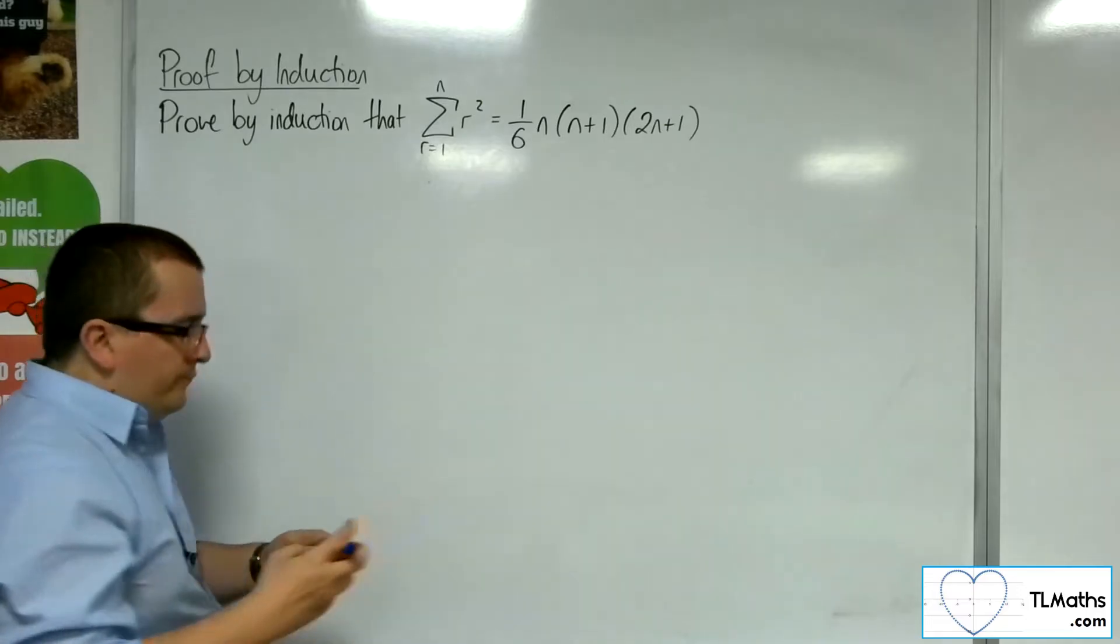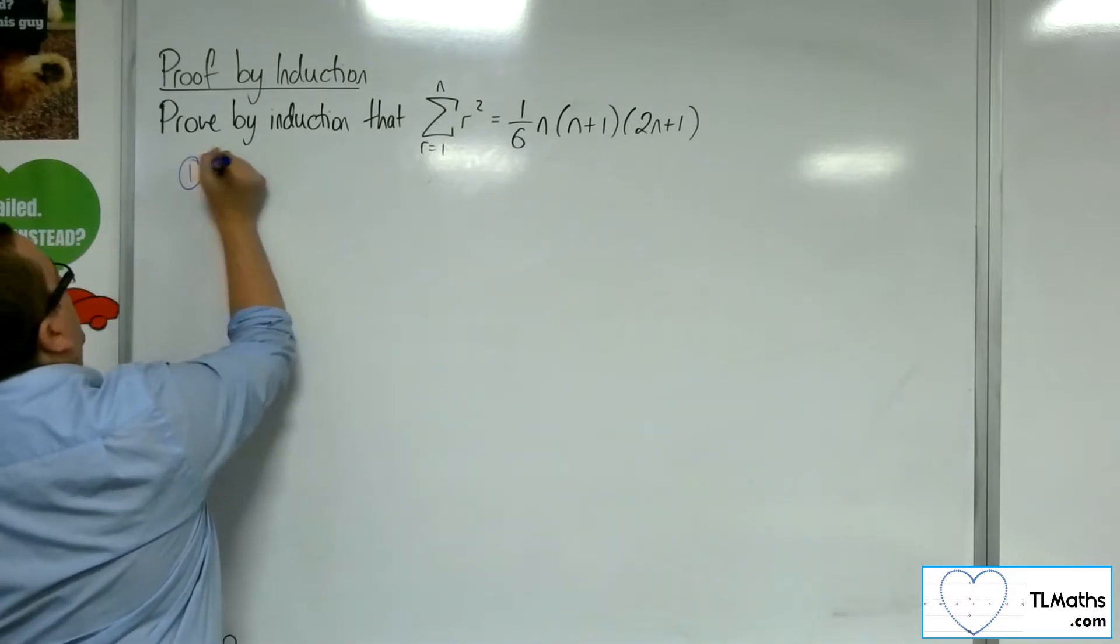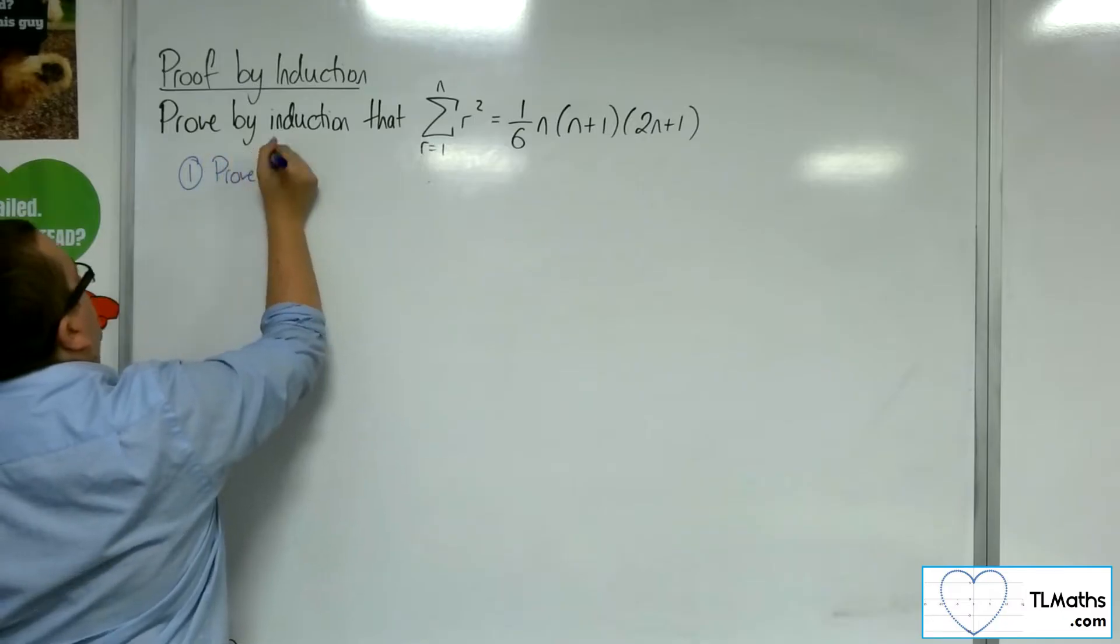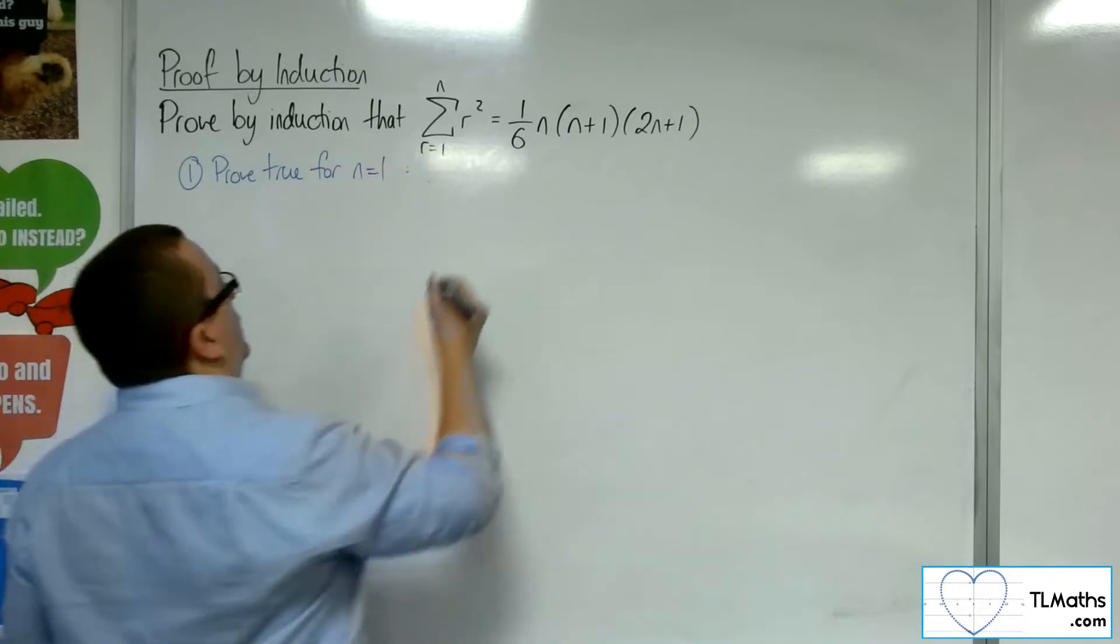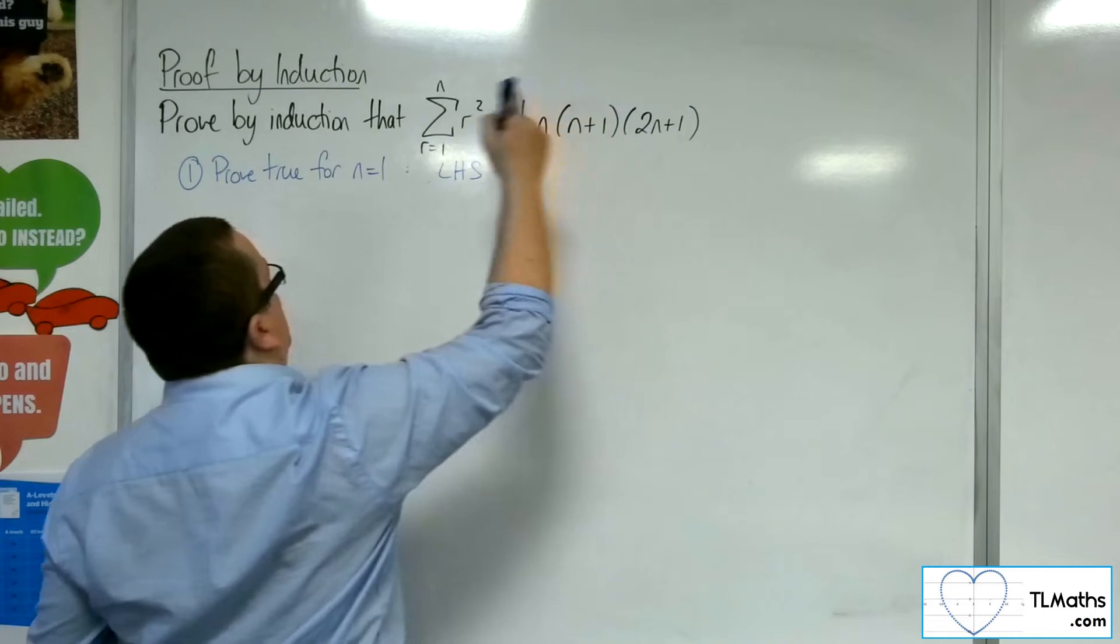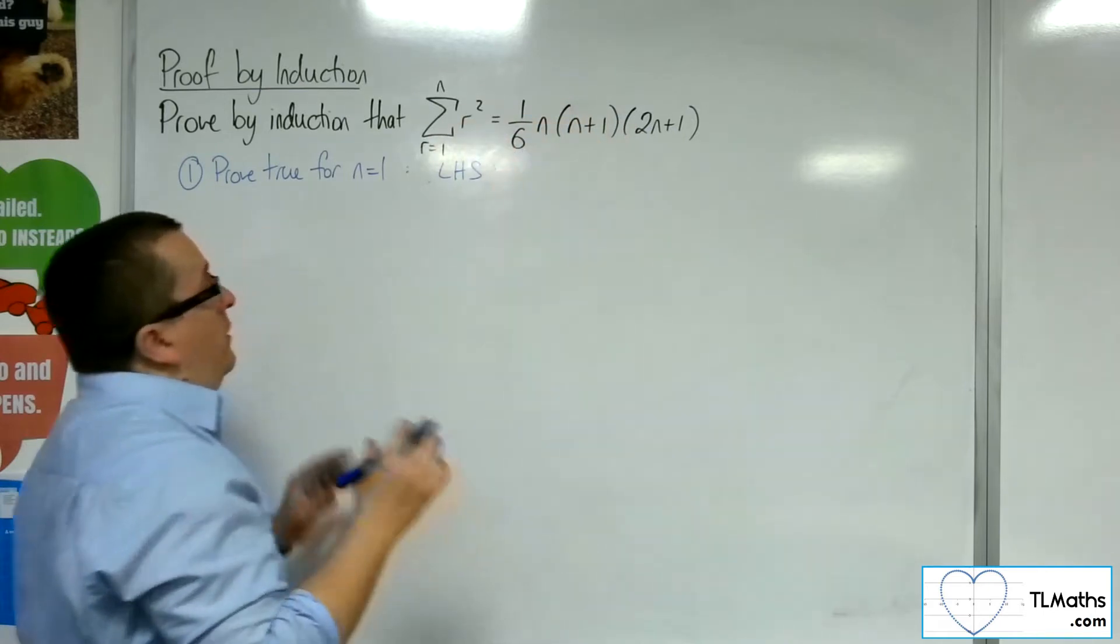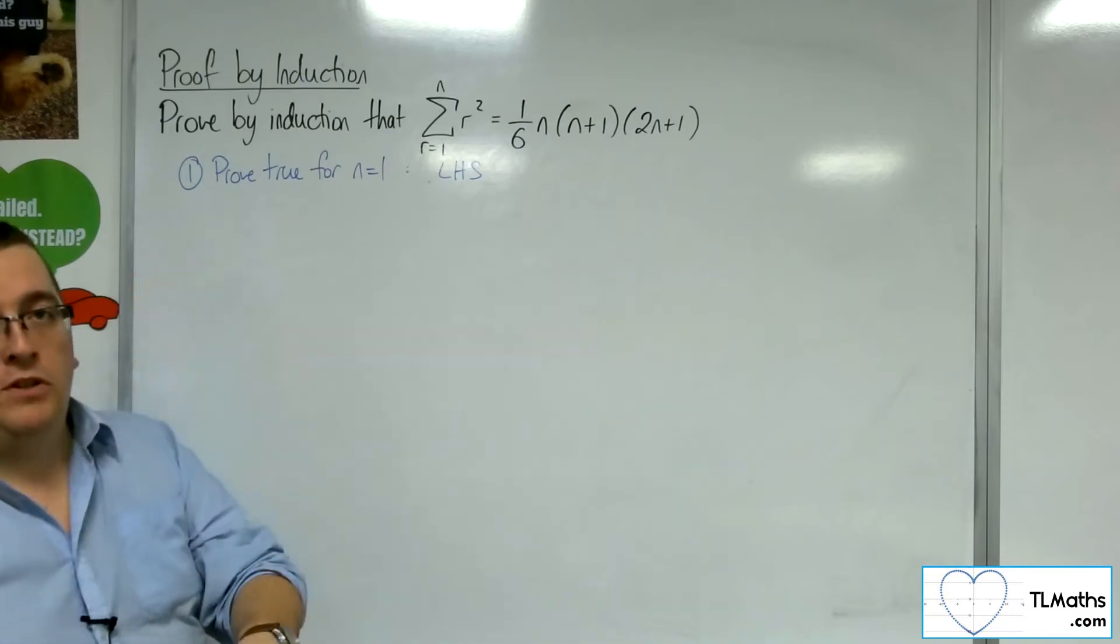So, step 1. Prove true for n equals 1. What we're going to do is look at the left-hand side of this equation and then show that it's true, that it gets us to the same value as if we substitute in the right-hand side.